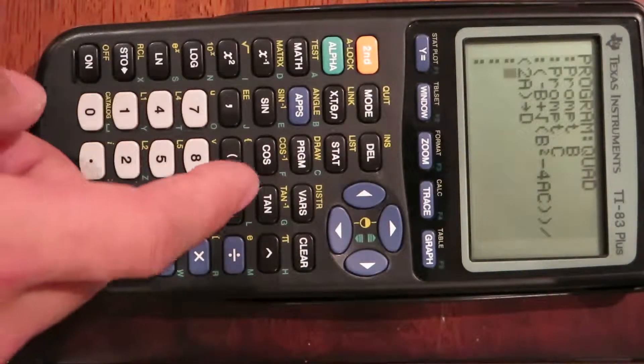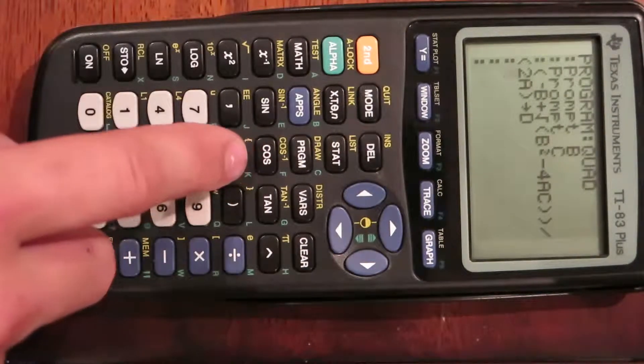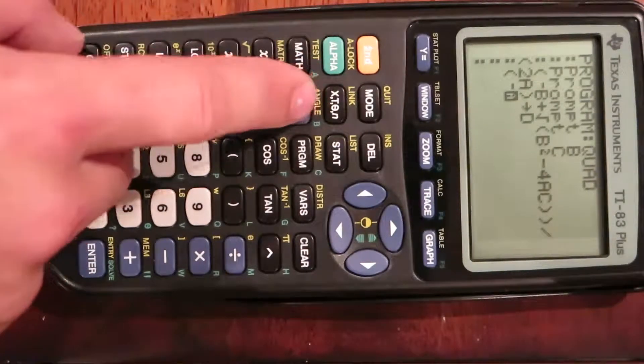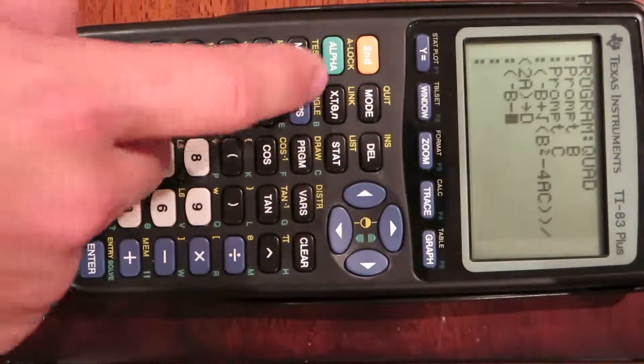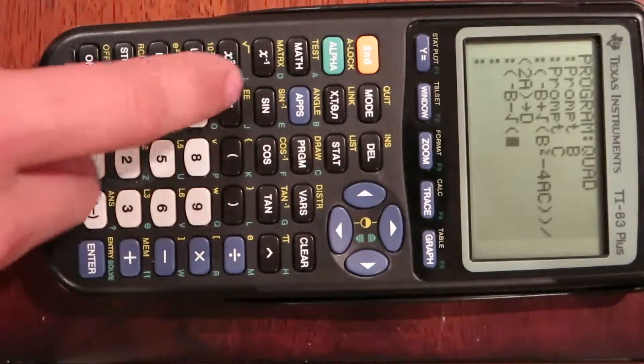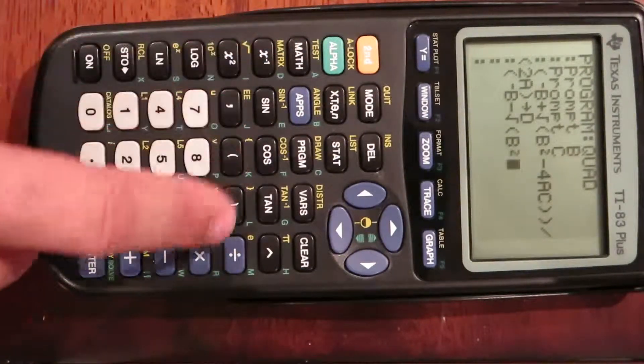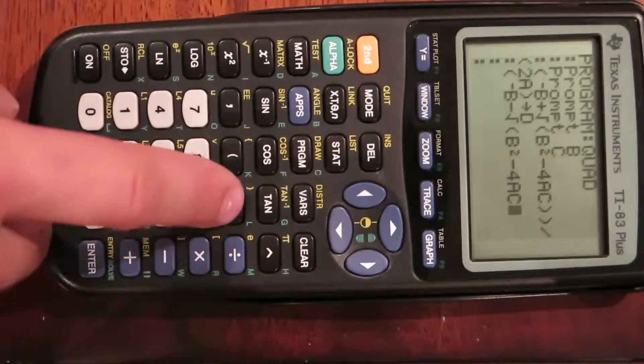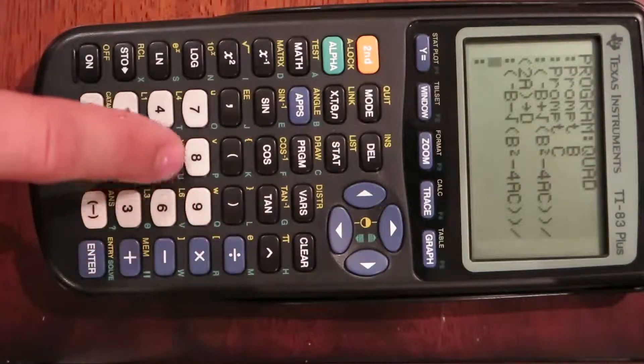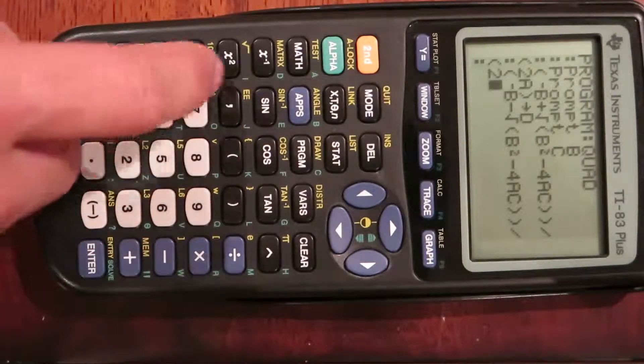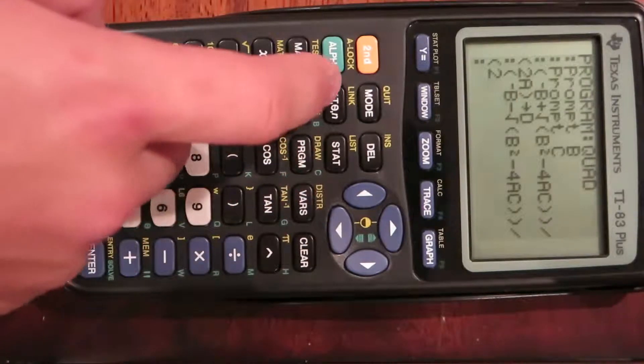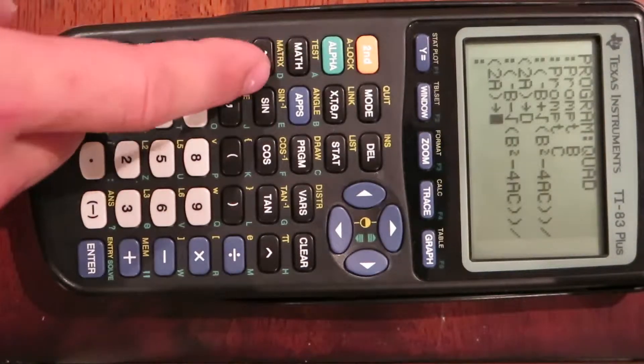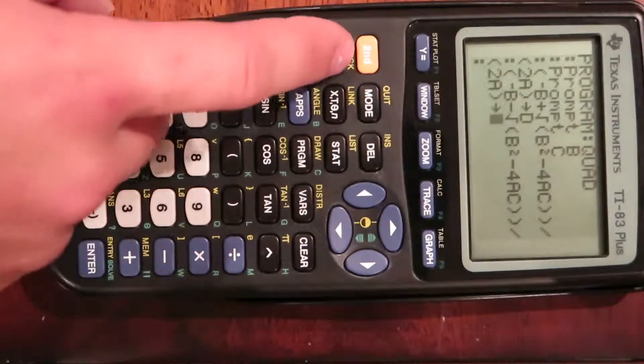Hit enter, and then we're going to type in negative B minus the square root: parentheses, negative B minus the square root of B squared minus 4AC, close parentheses, divided by 2A, close parentheses. Then go to store and alpha E for our fifth variable.